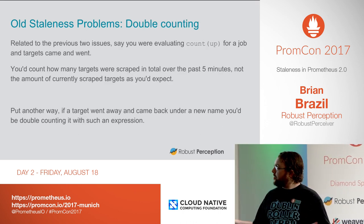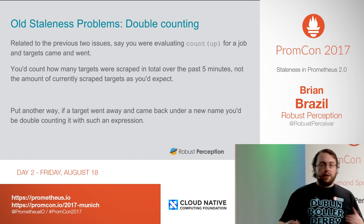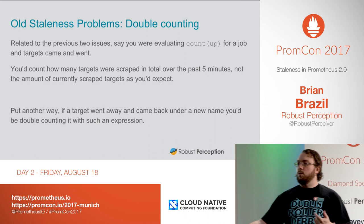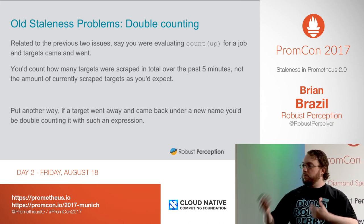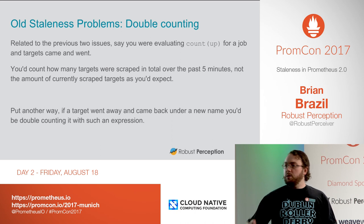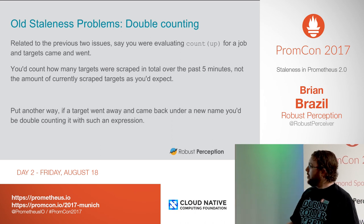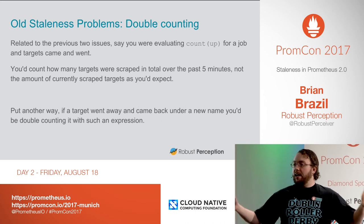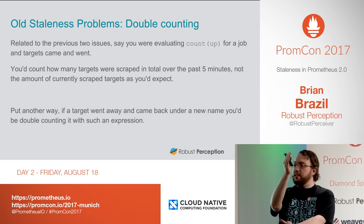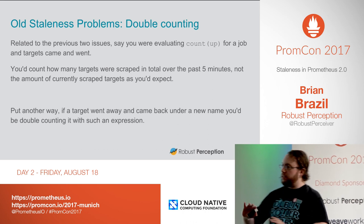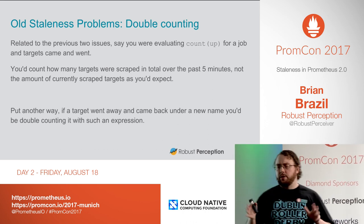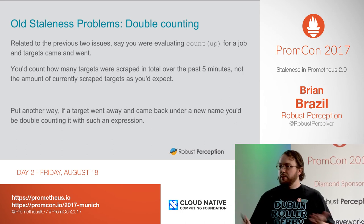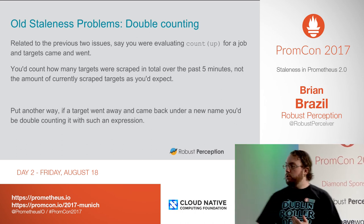Another problem is double counting. If your process dies and is rescheduled, you're still seeing both because the rescheduling happened in the last five minutes, so you double count it. The total becomes how many targets have existed over the last five minutes rather than how many targets exist now, which is what you actually want. Something like memory usage will get all sorts of weird artifacts.